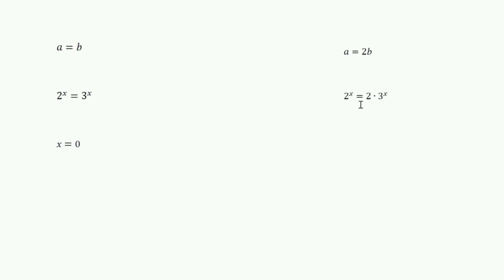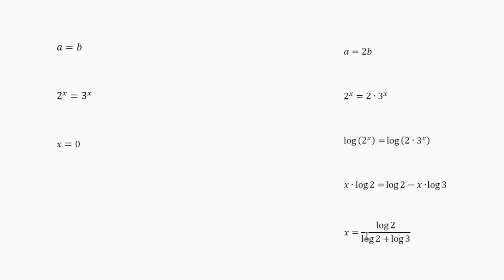When a equals 2b, 2 raised to x equals 2 into 3 raised to x. We can solve this using logarithms. That is, log of 2 raised to x equals log of 2 into 3 raised to x, or x × log 2 equals log 2 minus x × log 3. So we get x equals log 2 divided by (log 2 plus log 3).